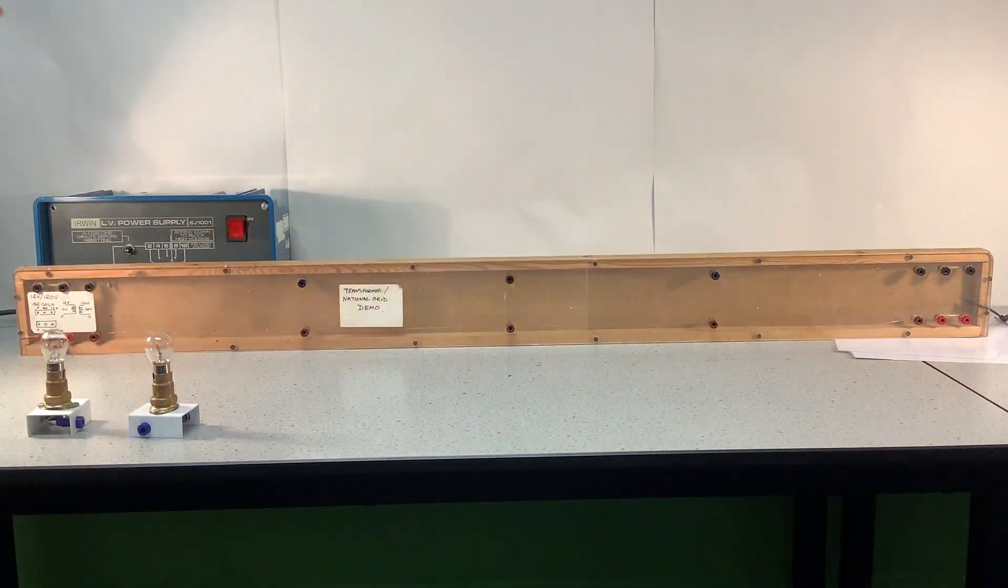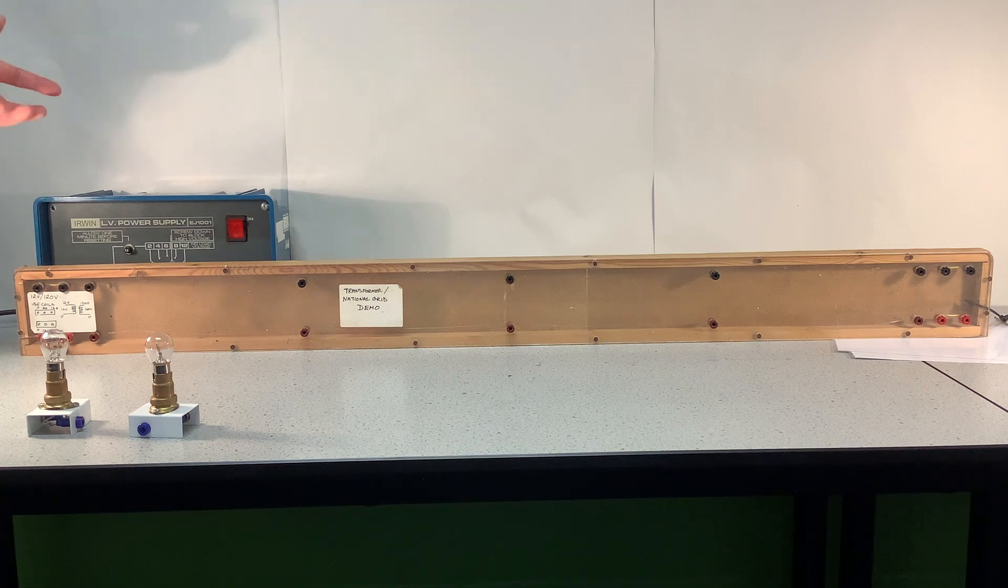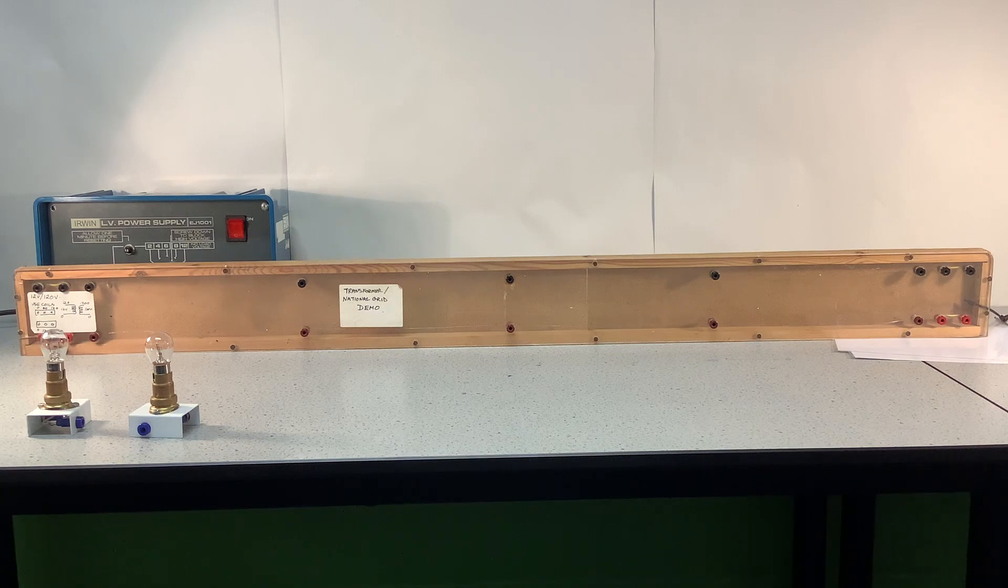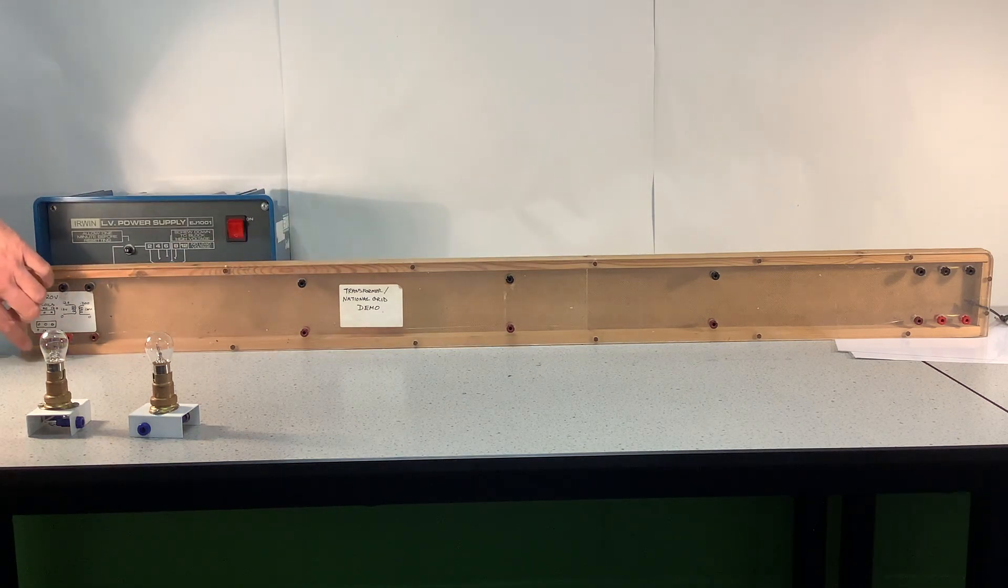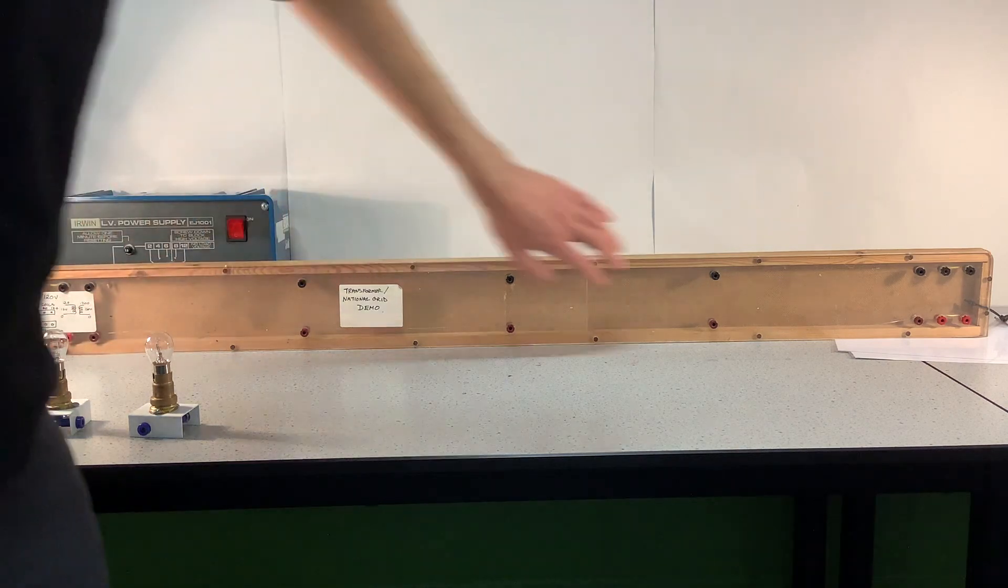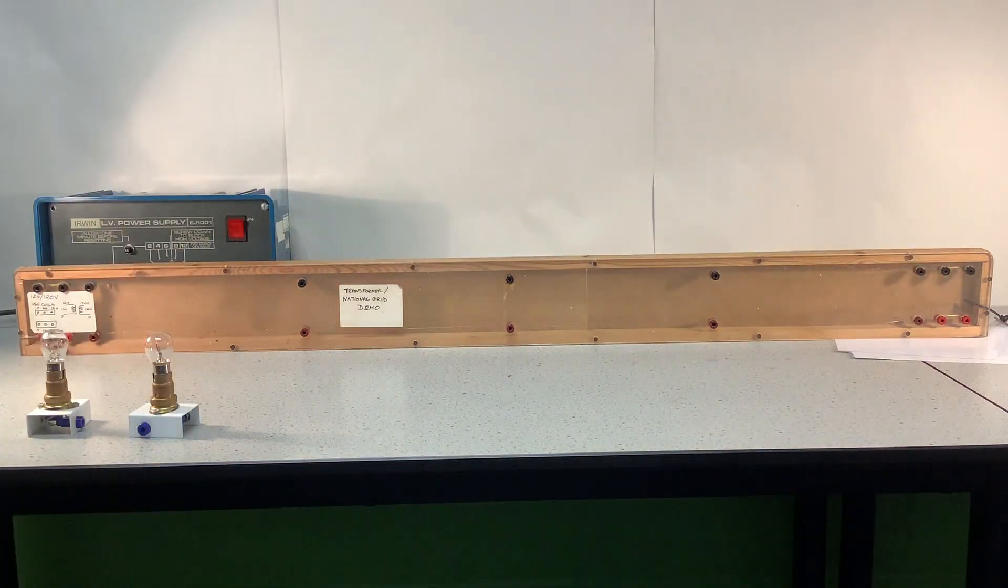And these wires are quite thin, so they have a reasonable amount of resistance. But they're supposed to be representing maybe thicker wires, which might have less resistance per meter, but when they are very long, would behave in a similar way. So this is meant to be representing long cables, maybe starting from a power station and finishing up at your house over there.